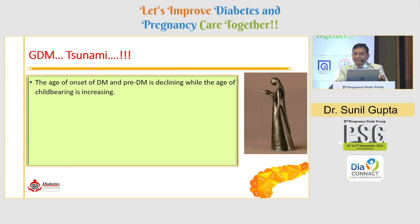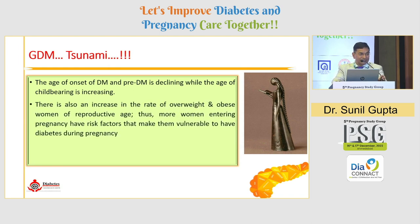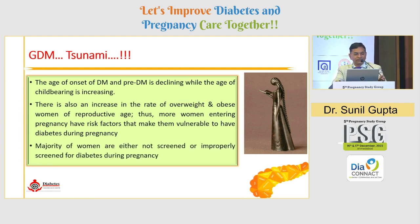Overlapping early GDM, GDM, and pre-gestational diabetes — this is a very important point. The age of onset of diabetes and pre-diabetes is declining while the age of childbearing is increasing. Most of our mothers were under 25 when they gave birth, but now the average age of pregnancy in India is around 28 to 30. That is why we are going to have more pre-gestational diabetes in women who have never tested their blood glucose early in life. There is also increased obesity in women of reproductive age, which is a risk factor for GDM as well as undiagnosed pre-gestational diabetes.